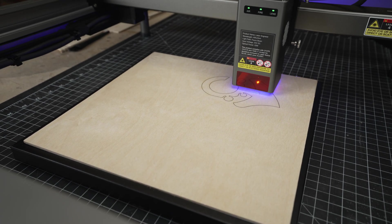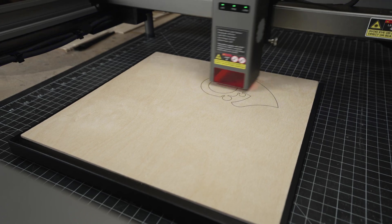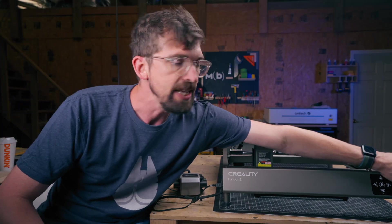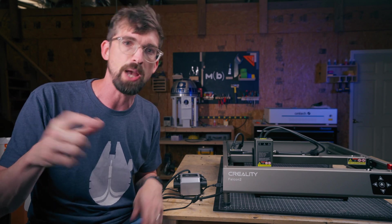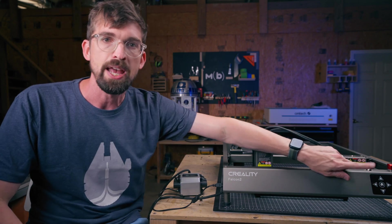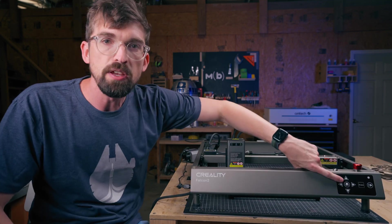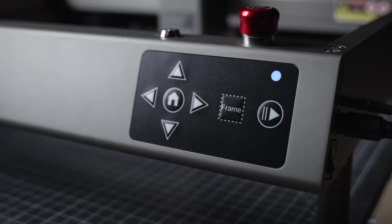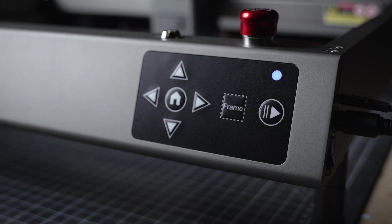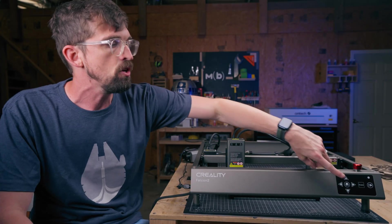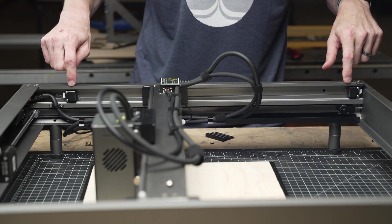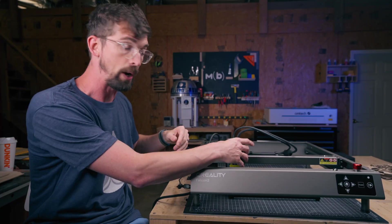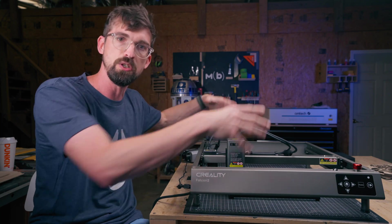Now that's great, but what if you just want to run this without having a computer nearby? They have a TF slot, which is like a little mini memory card that you can upload your design to after you process it through the software, put it in here and run it. And then they give you this right here, which you will need to be able to run this without connected to a computer, because you're going to need to not only home your machine, meaning it's going to use the limit switches on both sides so it knows like where this laser module is in relation to the frame.